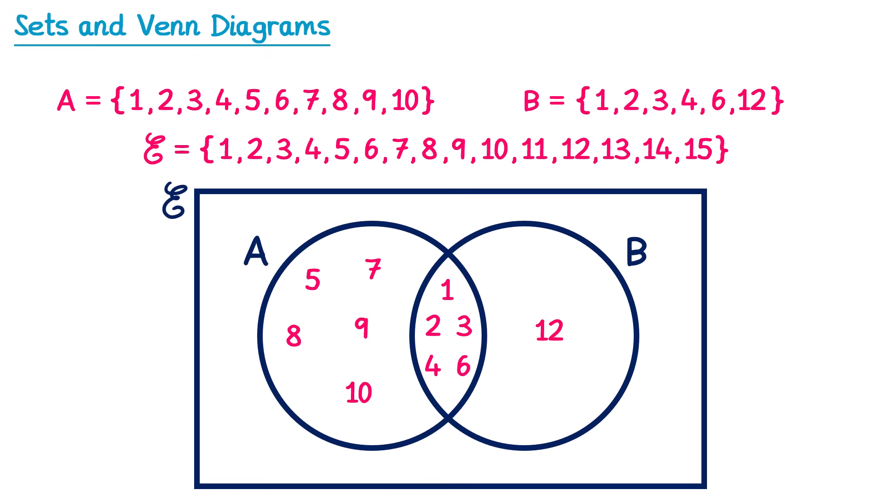At the moment we have the numbers 1, 2, 3, 4, 5, 6, 7, 8, 9, 10, and 12 placed. That means we're missing 11, 13, 14, and 15, because they're not in set A and they're not in set B. But they are still inside the universal set, so they need to go inside the rectangle but not inside the circles. This gives us a completed Venn diagram for these sets.